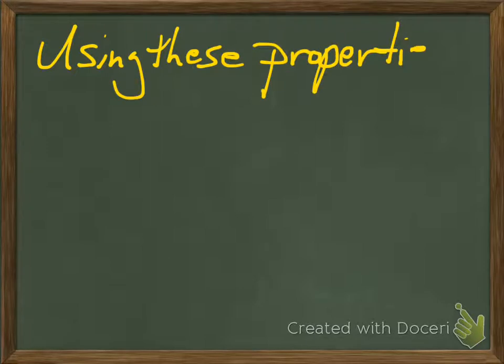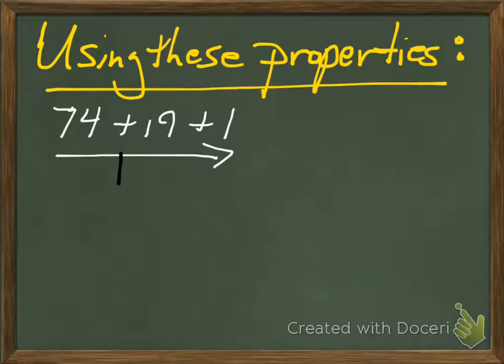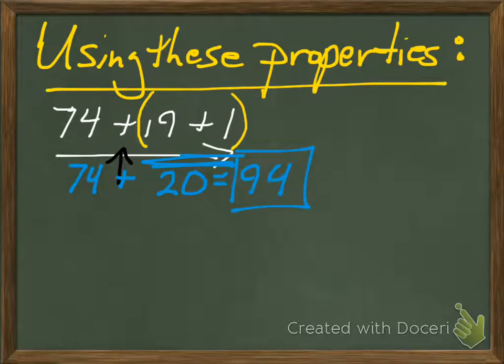Let's talk about how we can use these properties. Suppose I give you a problem like 74 plus 19 plus 1. We could start from the left and do that first 74 plus 19 first, but that's going to be kind of a tricky problem. It's going to involve some carrying. So what if instead we regroup and we group the 19 and the 1 together? If we do the 19 plus 1 first, that's easy. That's 20. Now, 74 plus 20. Well, 20 is a lot easier number to add than 19, even though it's bigger. I can do that in my head pretty quick. So now I get 74 plus 20, and that's going to equal 94. And I'm done.